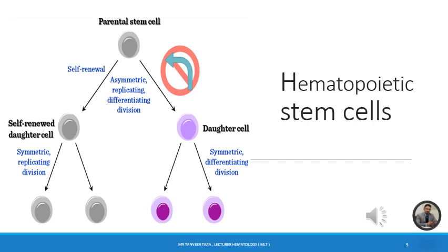Stem cells multiply in an asymmetric fashion. We have two styles: asymmetric division, which has the qualities of replicating, differentiating, dividing, and self-renewal; and symmetric division, which moves forward continuously. In asymmetric division, some parent cells move forward, mature, and give a desired cell, while the other group maintains its own population through self-renewal — these are hematopoietic stem cells.